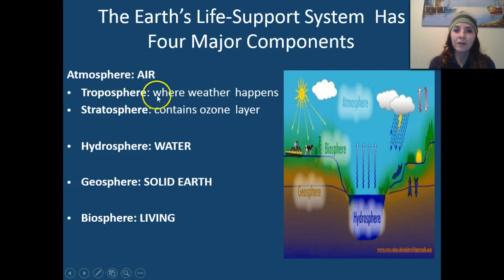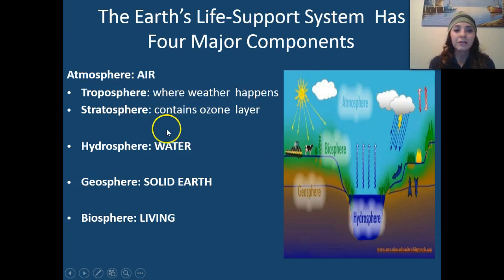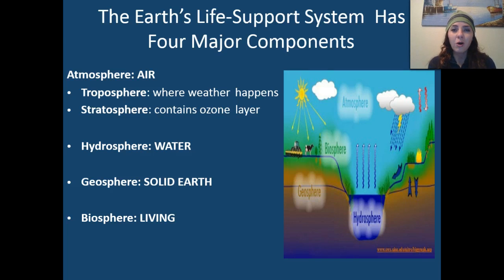The atmosphere is subdivided into two components. We have the troposphere, which is where weather happens — that's where we have our rain and everything like that. And the stratosphere, which contains the ozone layer. You might have heard about this on the news; there are actually holes in the ozone layer in different areas around the world, such as New Zealand.